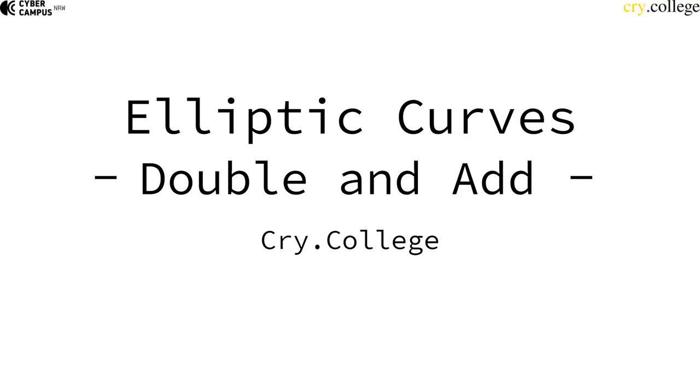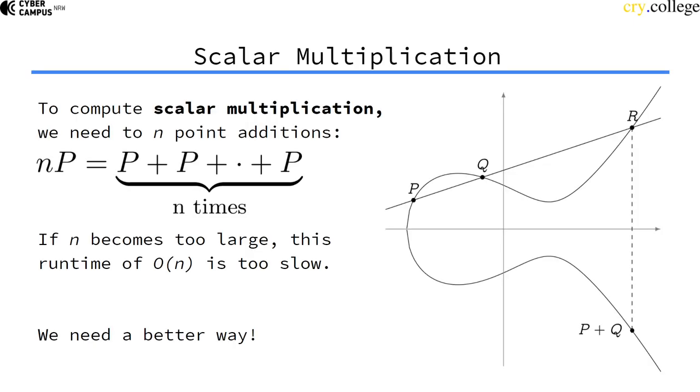A central algorithm in elliptic curve cryptography is the so-called double and add algorithm. When we do scalar multiplication, and we do that a lot, we'll have the problem that the scalar n that we multiply with is huge.